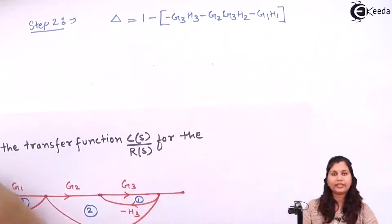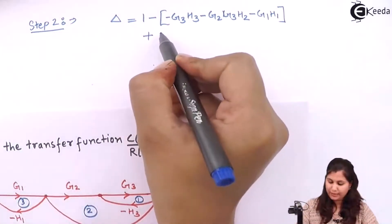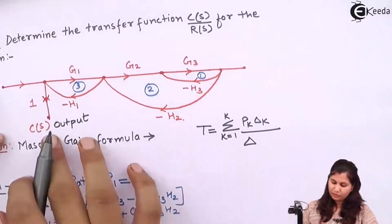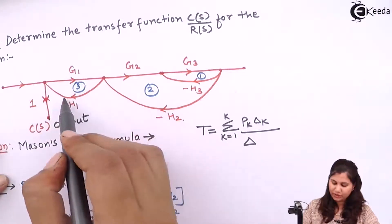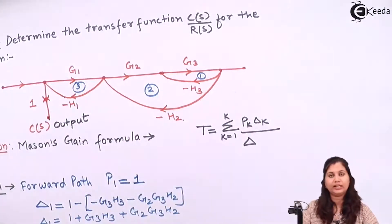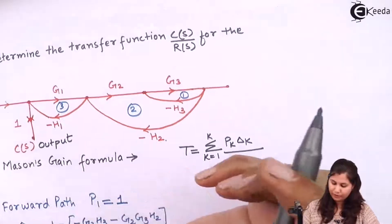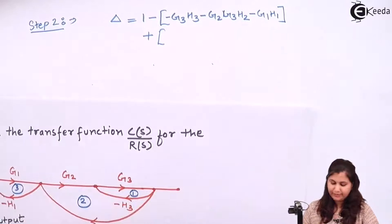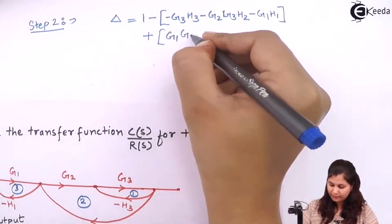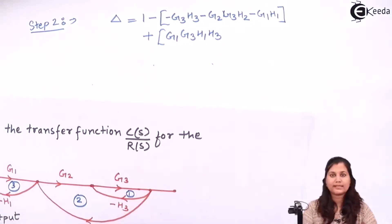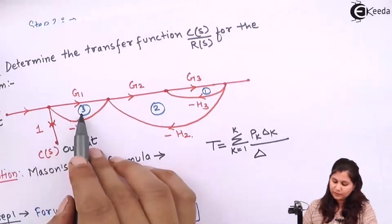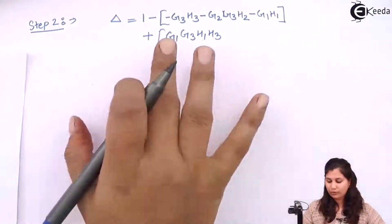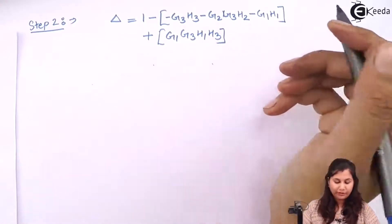This is the sum of the gains of all the individual loops. Now we add the sum of the gains of pairs of non-touching loops. Loop 3, G1H1, and loop 1, G3H3, form a pair of non-touching loops. Taking their gains: (−G3H3)·(−G1H1) = +G1G3H1H3. Loops 3 and 2, and loops 1 and 2, are touching each other, so we have only one pair of non-touching loops and no triplets. So the determinant Δ is determined.